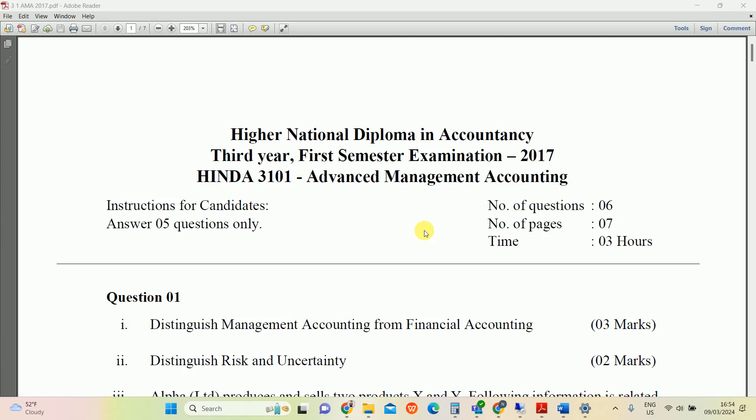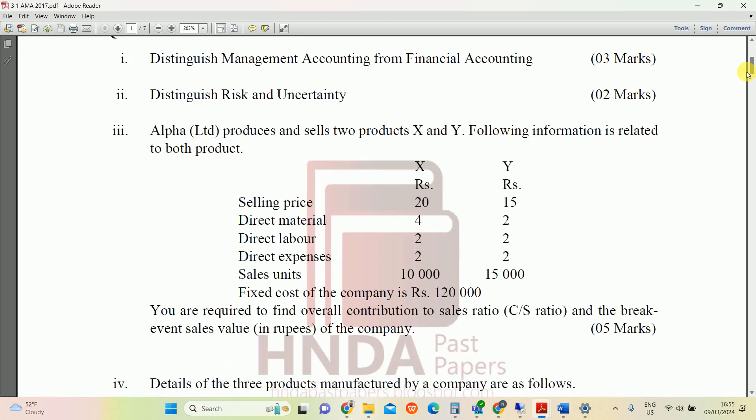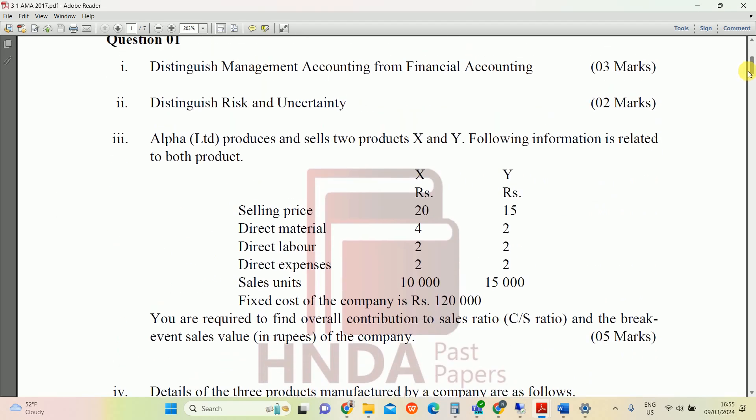Hi guys, in this video we are going to discuss how to calculate the C/S ratio. We took the 2017 Advanced Management Accounting past paper, H&TA 3101, third year first semester. There are some questions in question number one and third questions.